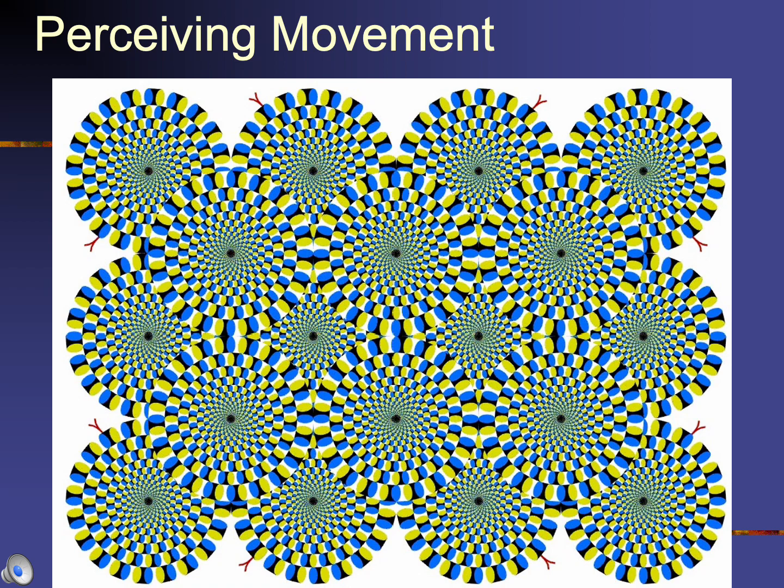In this section, we're going to review how the visual system perceives movement. Movement is obviously an important aspect of the environment that your visual system has to perceive if you're to act on objects that are moving in it.